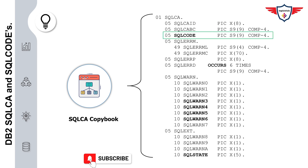The first important variable defined in the SQL Communication Area is SQLCODE. Its type is PIC S9(9) COMP-4. SQLCODE contains the return code passed by DB2 after execution of an SQL statement. A value of 0 indicates that your SQL statement executed successfully with no issues.